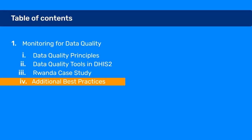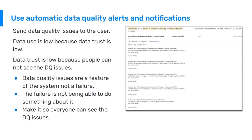Now we're going to look at some additional best practices for data quality monitoring. One of the most important best practices is to use automatic data quality alerts and notifications. You need to be able to send data quality alerts when a data quality issue is detected directly to the user or users who are able to address that data quality issue.